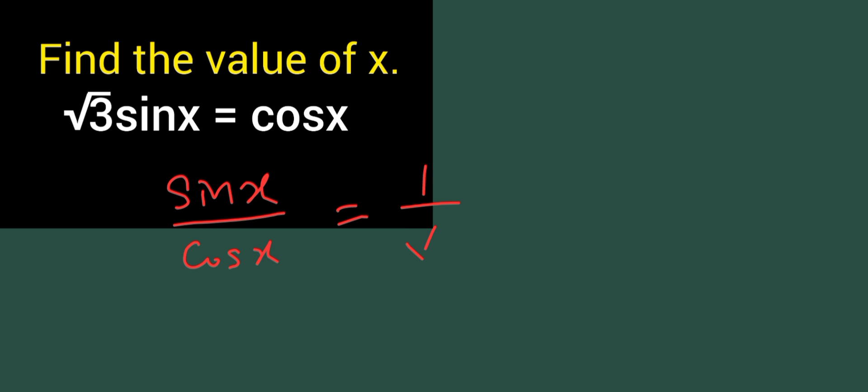So something sin x upon cos x. What I know, sin x upon cos x is nothing but tan x. And this 1 upon root 3 is equal to 1 upon root 3, and I know 1 upon root 3 is the value of tan 30 degree or tan pi upon 6.